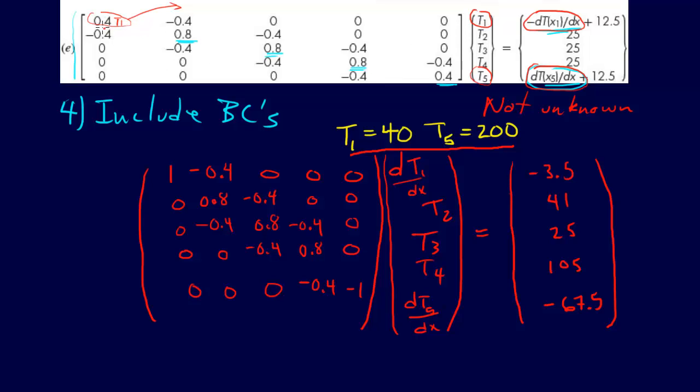We also have a T1 times 0.4 that's going to have to go to the other side of the equation as well. So we have to do that, and that's going to affect these two entries for this one. And again, similar situation with T5.